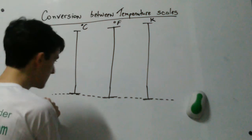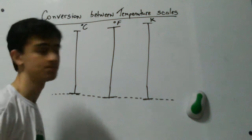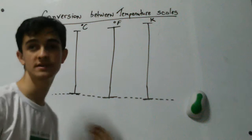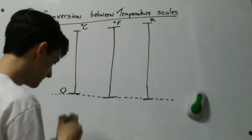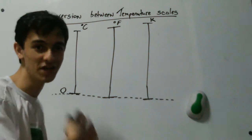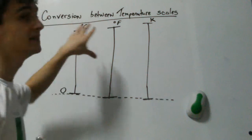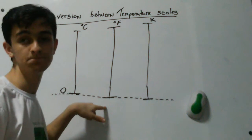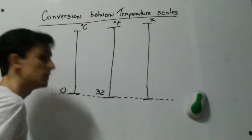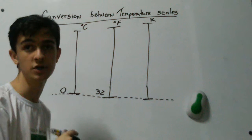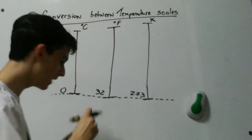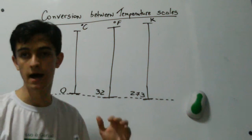Let's say that this temperature on the bottom is the temperature at which ice melts. When people use the Celsius scale, they call this temperature zero. The person who created the Fahrenheit scale called this same temperature 32 degrees Fahrenheit. And the Kelvin scale called this temperature exactly 273 Kelvin. These are different numbers, but the temperature is the same.